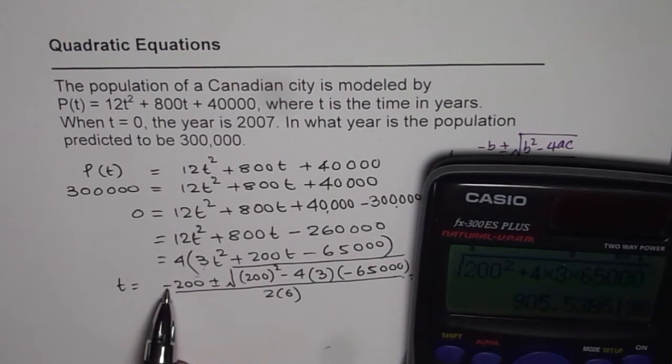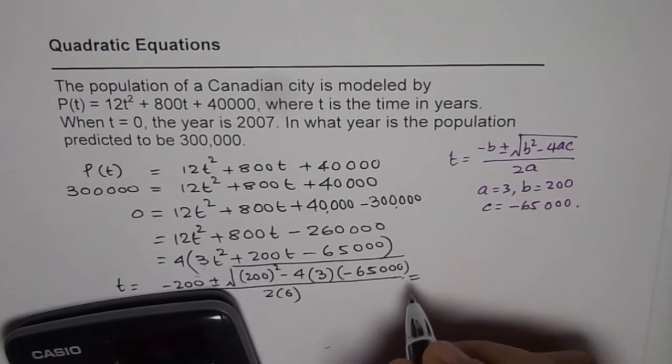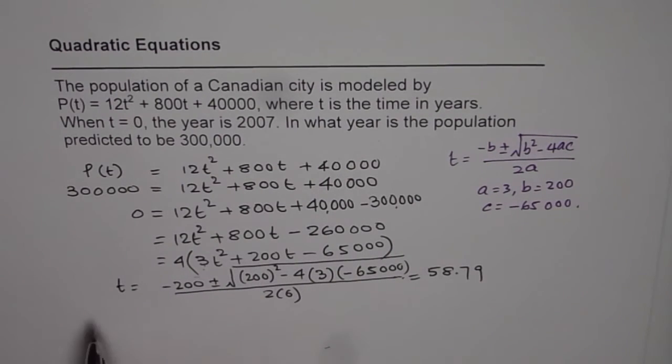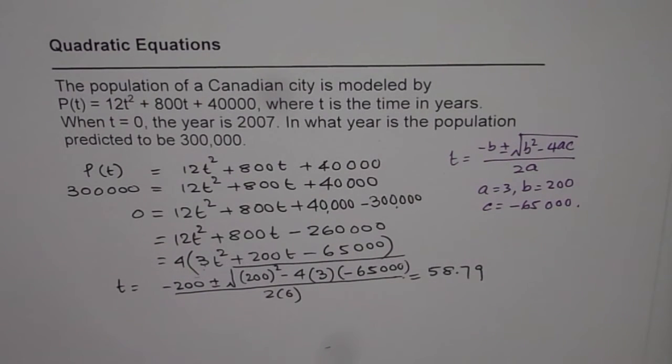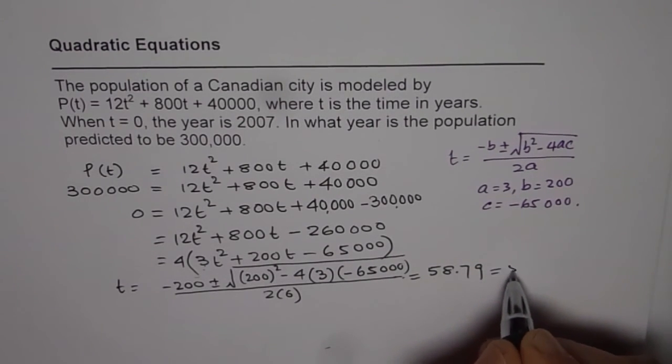So from here we'll subtract minus 200, so we'll do minus 200. That gives us 705.53 and we'll divide that by 2 times 6, which is 12. So we'll divide it by 12 and that gives us 58.79. So t for us is 58.79. So we can say after 58.79 years, that means after 59 years.